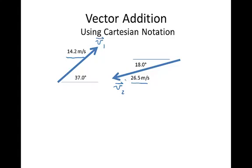So we have to get each of these into Cartesian form first. So here's our V1 and since we're going to break this into its components we're going to have the X component here, the Y component here.